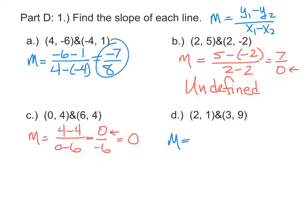One last one with two points: subtract the y's in the numerator, 1 minus 9, and the x's in the denominator, 2 minus 3. That gives us negative 8 over negative 1, which simplifies to 8.